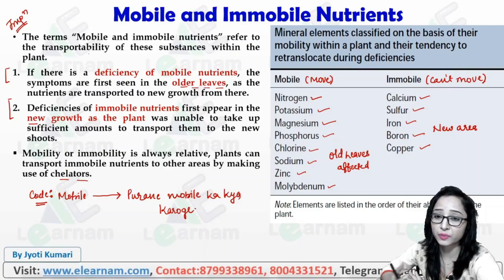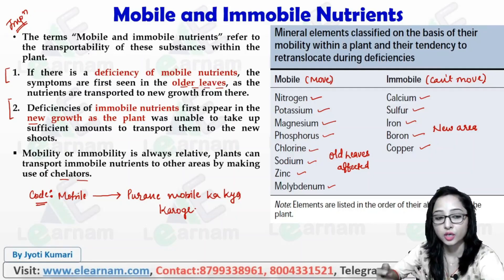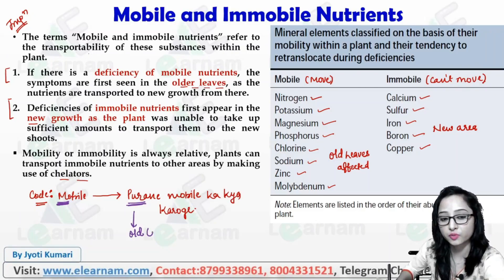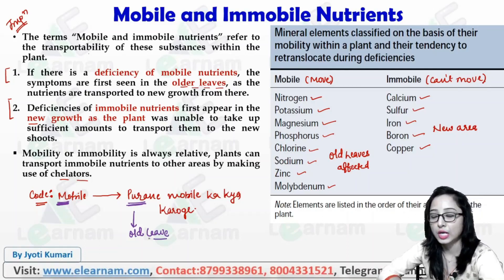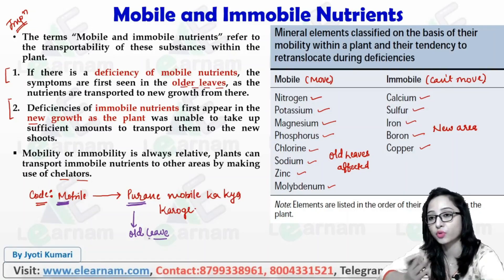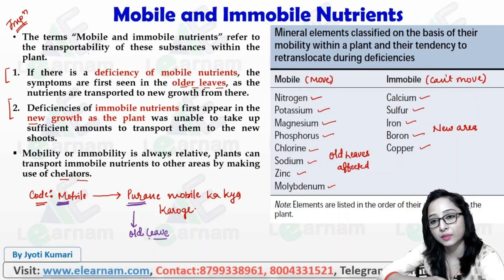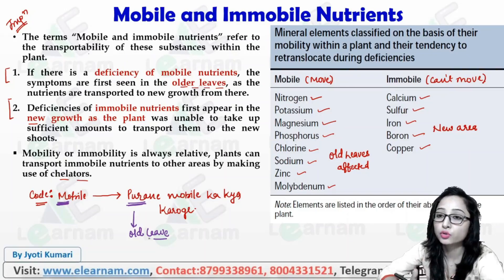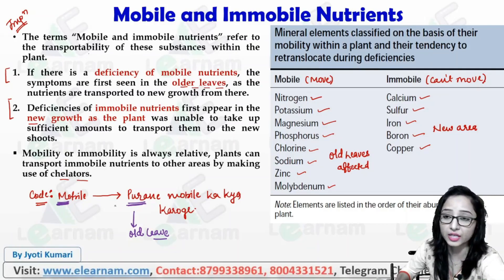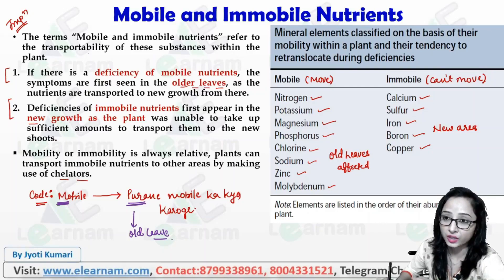Here is an analogy to remember: if you have a new mobile phone, what will you do with your old one? So, if there is a problem or deficiency in a mobile element, think of the old mobile — the older leaves are the ones affected. The older leaves or older parts of the plant will be affected first when there is a deficiency in a mobile element.